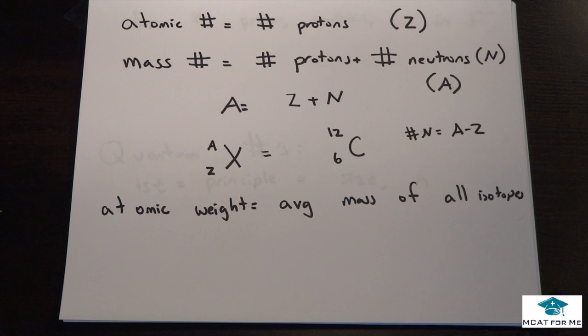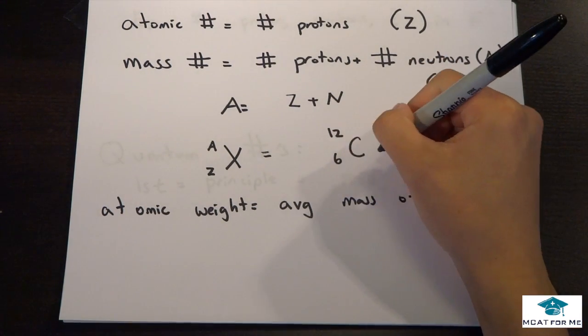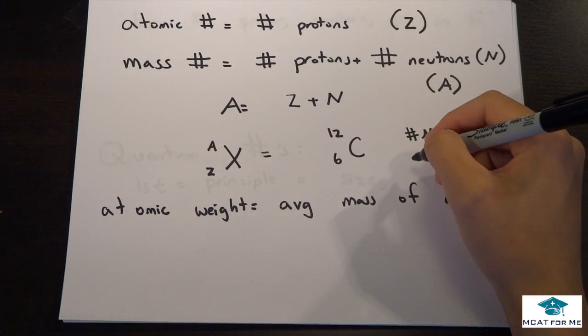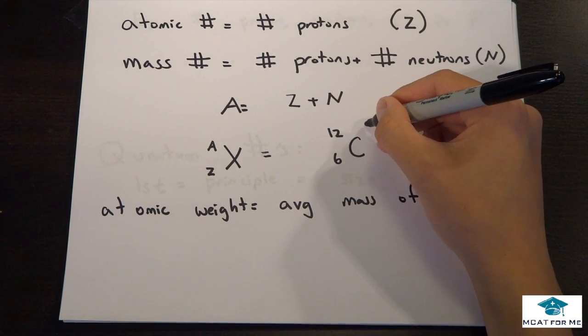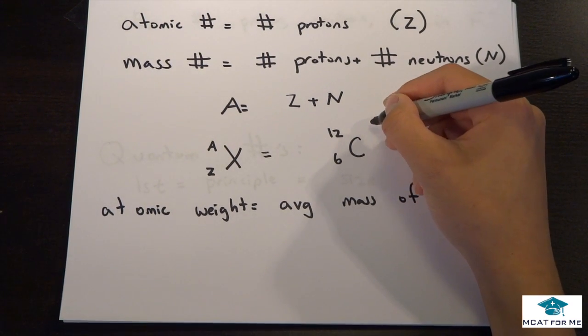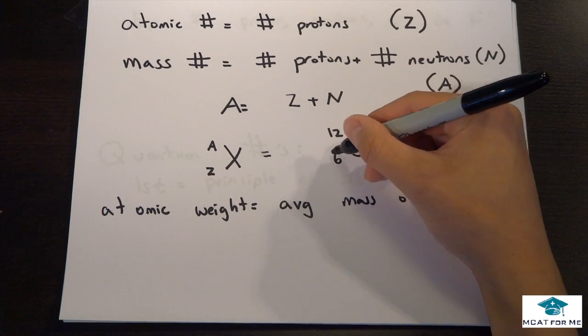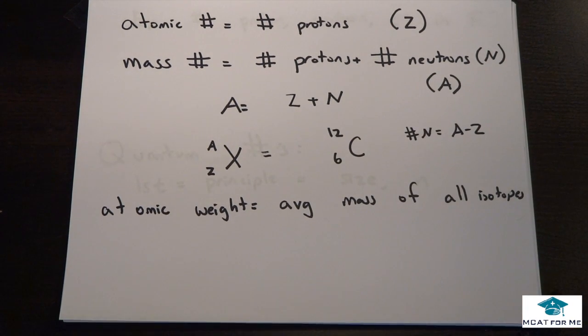From this we can tell one more thing. There will always be the same number of protons as electrons unless it's charged. In this case carbon has zero charge, so there are six protons and six electrons because protons have a plus one charge and electrons have a minus one charge.